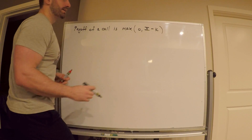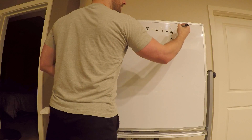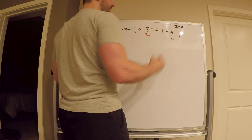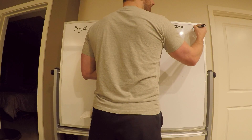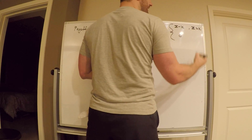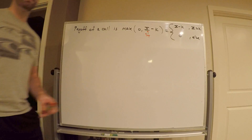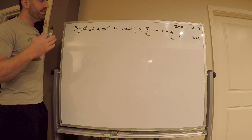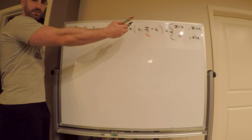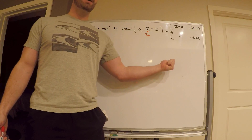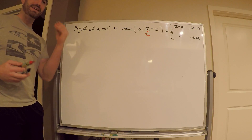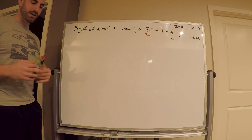This payoff can be written as a piecewise function: it equals X minus K when the stock price at expiration exceeds the strike, and zero otherwise — zero if the stock price at expiration is less than K. The fair price of this call option should be the expected payoff at time t, discounted back to the present. We're going to pay some money now to purchase a call, and its value should be the expected payoff discounted to time zero.